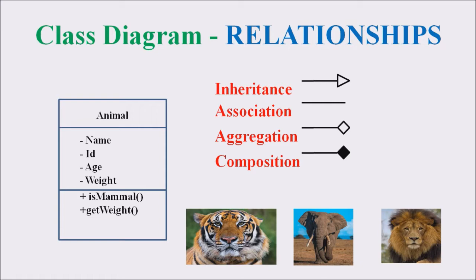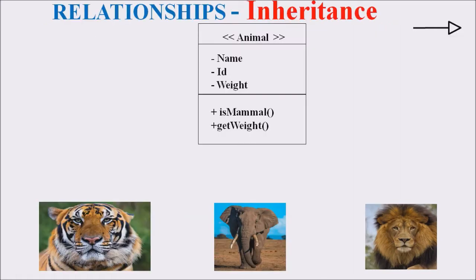Inheritance can be explained with an example. Inheritance is represented with a triangle. Consider a class called Animal. The different attributes of this class are name, ID, and weight, and the functions associated with it are mammalOf and getWeightOf. All the attributes are private and all the methods are public.